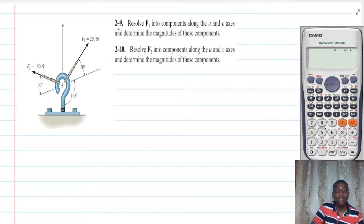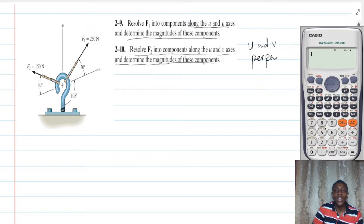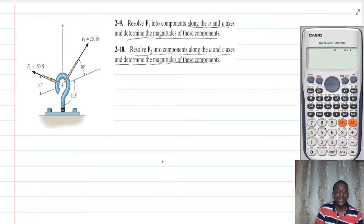The same problem has two parts. The first part is to resolve F1 into components along the u and v axes and determine the magnitude of those components. The second part is to resolve F2 into components along the u and v axes. Please take note that u and v are not perpendicular — they are not rectangular components — so we cannot use sine or cosine. So how can we resolve it? Let's look at it together.